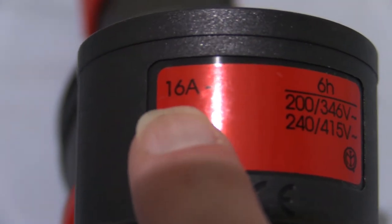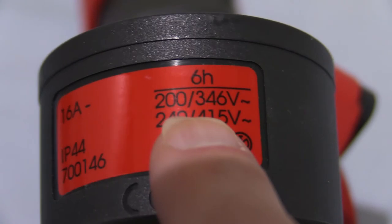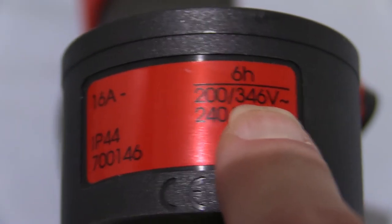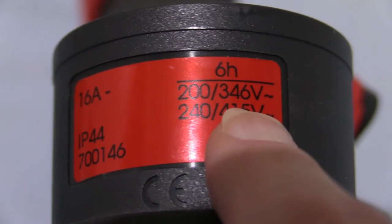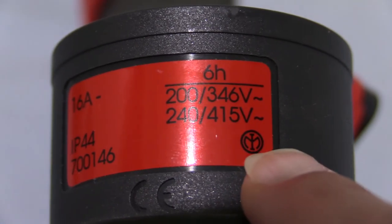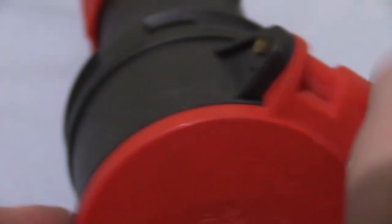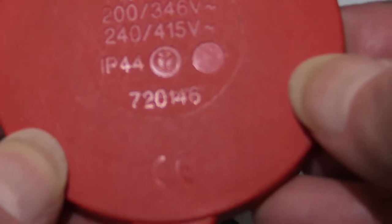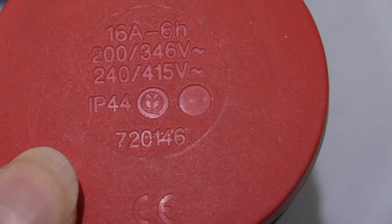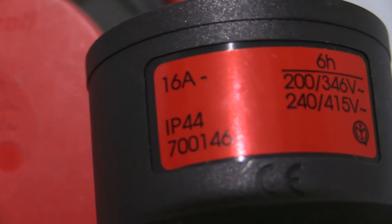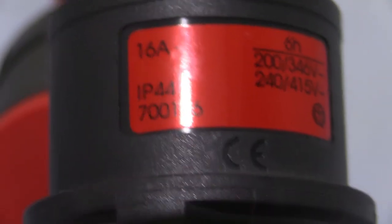Let me get this one up in front of the camera for the plug. As you can see, it says 16 amps, six hour, and then there's those two voltage bands again: 200-346 or 240-415 volts. There's that logo once again, IP44. We've got 720146 on here and 700146 on there. So that's probably just a part number, not a standard of any kind.